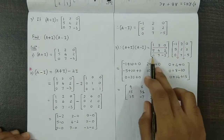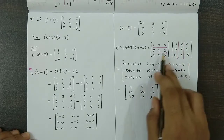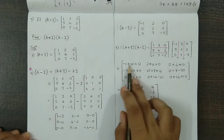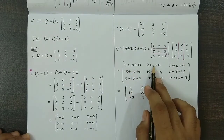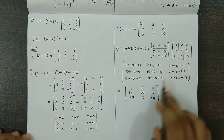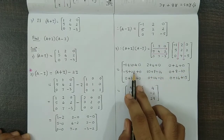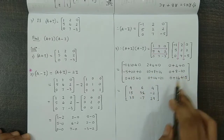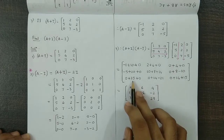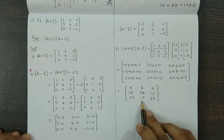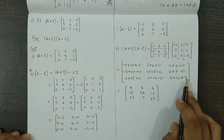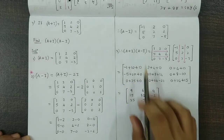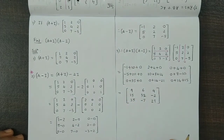R3×C1: 0+35+0; R3×C2: 0+14-21; R3×C3: 0+14+15. Adding up: first row is [9, 6, 4]; second row: -5+20=15, 10+8+14=32, 8-10=-2; third row: 35, 14-21=-7, 14+15=29. So this is the required product (A plus I) into (A minus I).